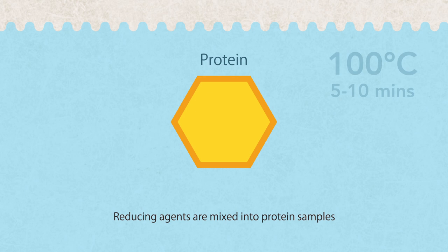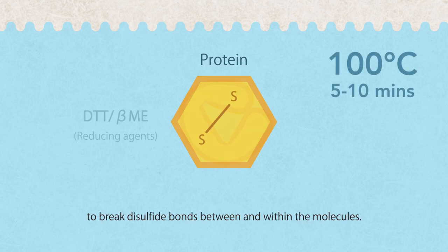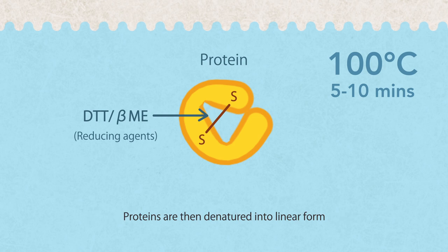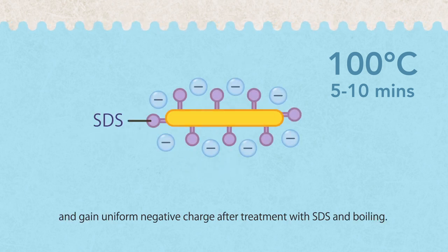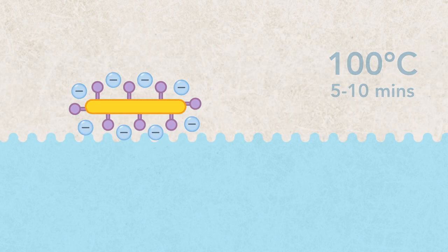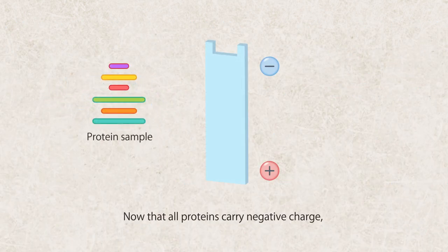Reducing agents are mixed into protein samples to break disulfide bonds between and within the molecules. Proteins are then denatured into linear form and gain uniform negative charge after treatment with SDS and boiling.